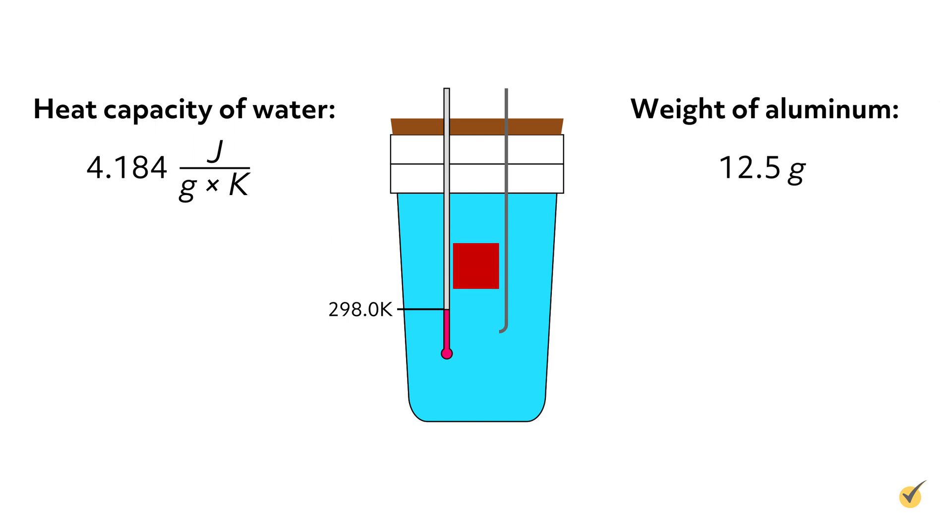We add in a piece of aluminum that weighs 12.5 grams, which was just heated in boiling water. So it has a temperature of 100 degrees Celsius, or 373 kelvin.